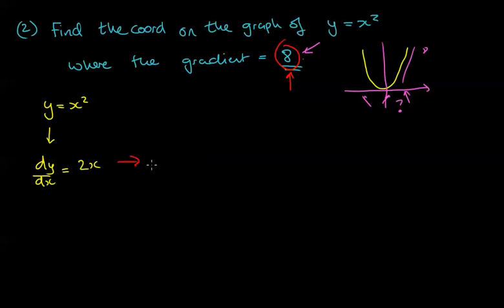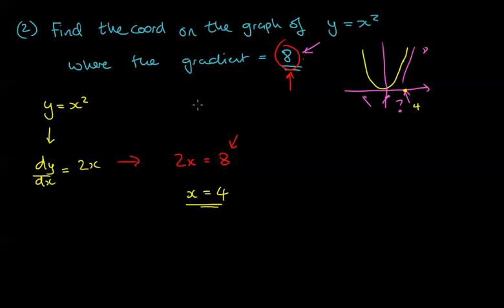So we set up the equation: 2x = 8, which gives x = 4. That means at x = 4 on the graph, the gradient is 8 steep. But we need the full coordinate — we know x = 4, but what's the y component?